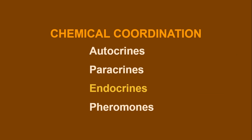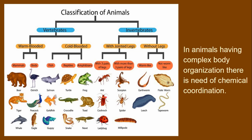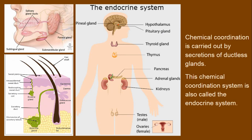So these are the four types of chemical coordination: autocrine, paracrine, endocrine, and pheromones. In animals having complex body organization, there is a need for chemical coordination.